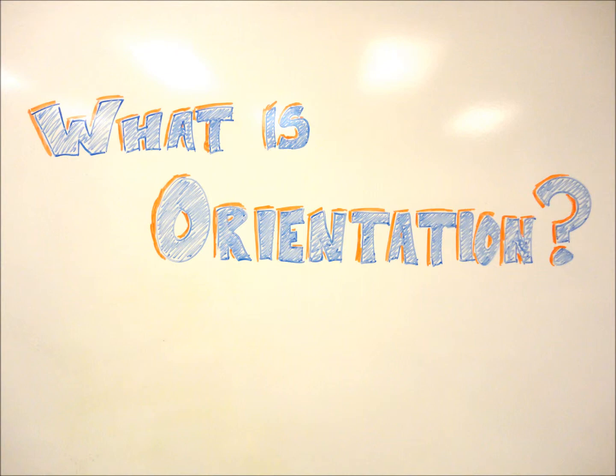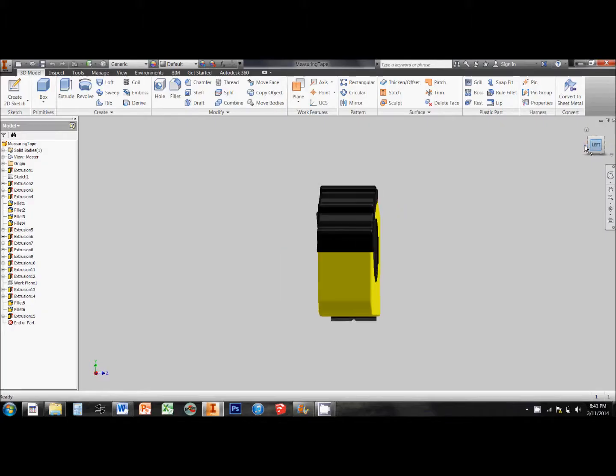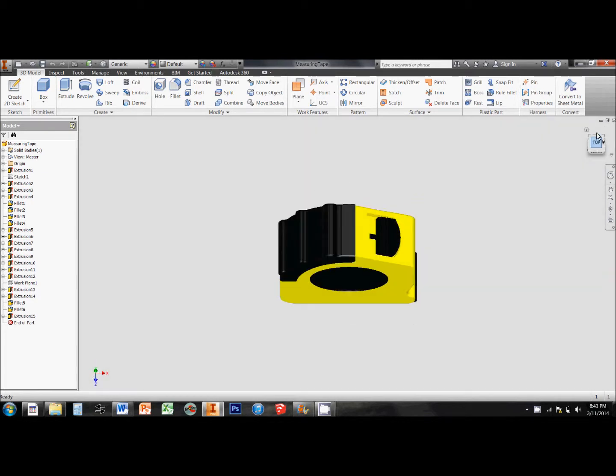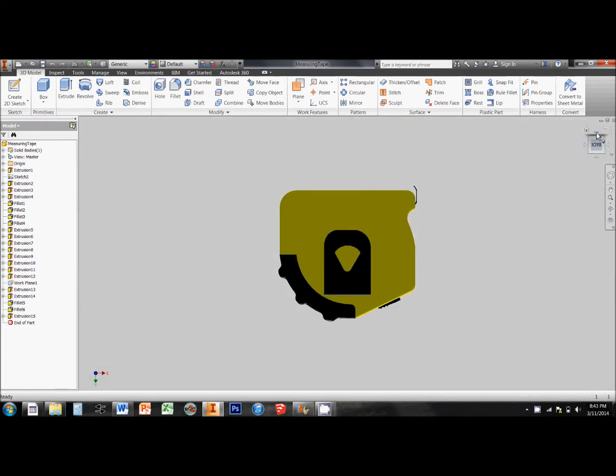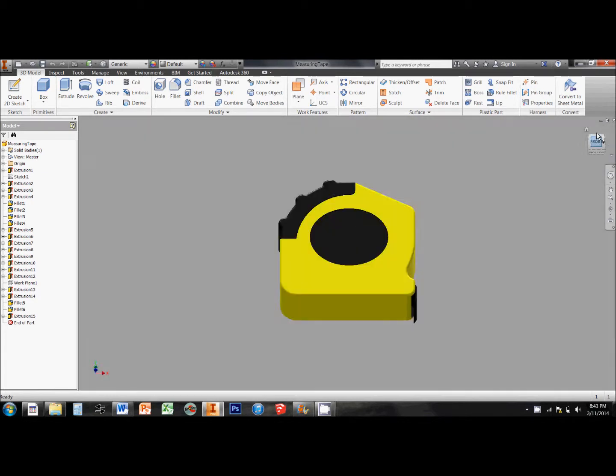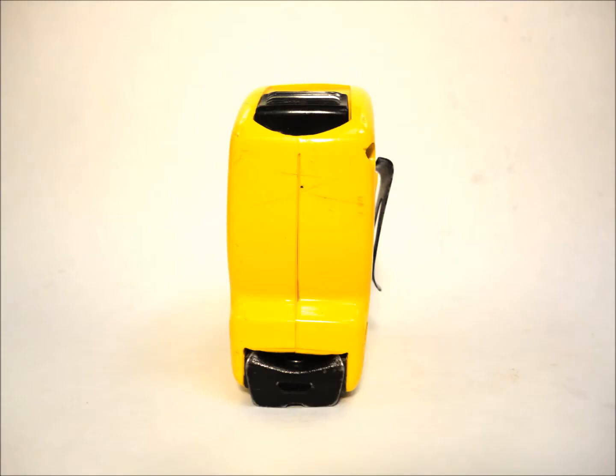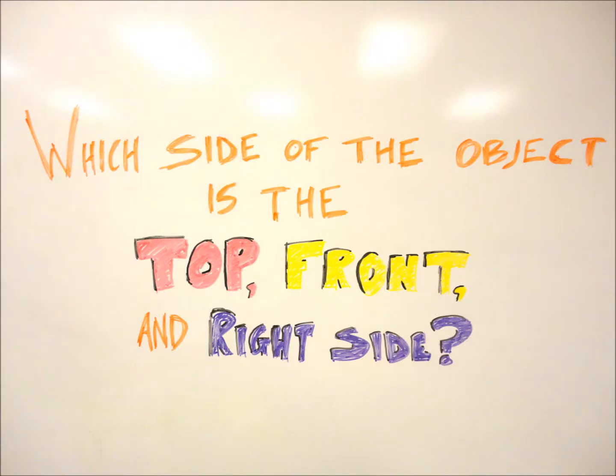There are a few things we look for to see if a drawing has proper orientation. First, we need to know a few things about the object that we're drawing. There are six different sides of an object that we could draw, but we will usually only draw three in orthographic: the front, the top, and the right side. So first we need to know which side of the object is the front, the top, and the right side.